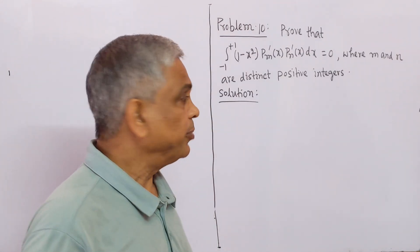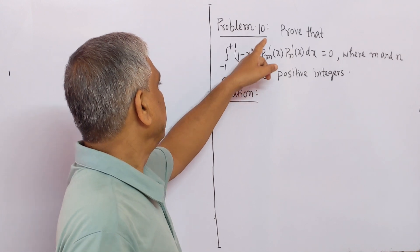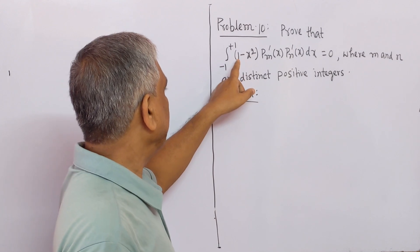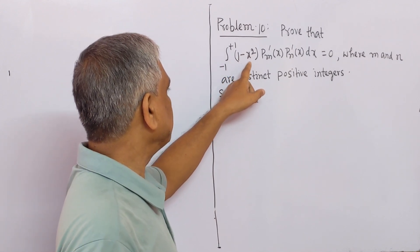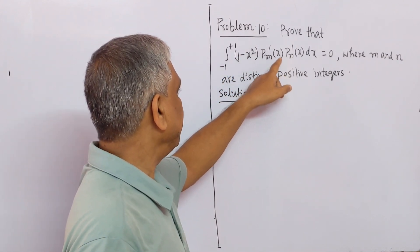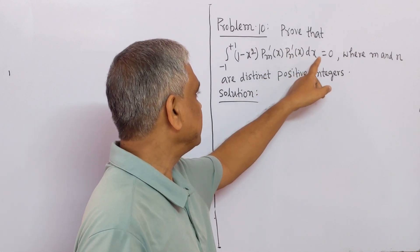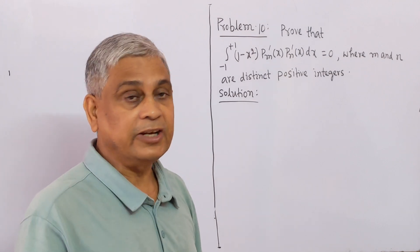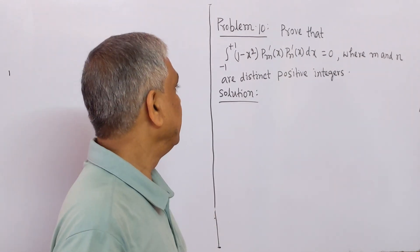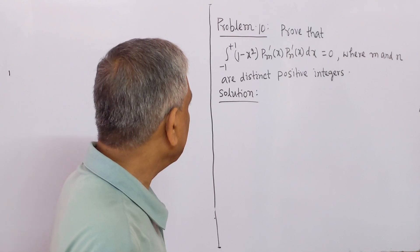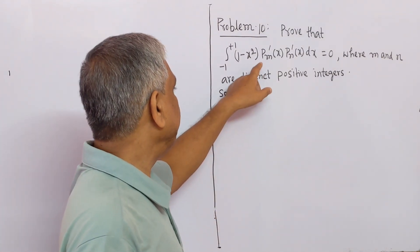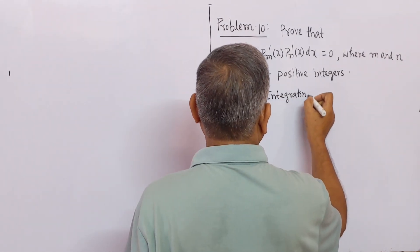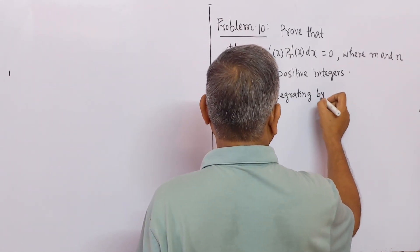Now we solve problem number 10. Prove that the integral from -1 to +1 of (1-x²) P_m'(x) P_n'(x) dx equals 0, where m and n are distinct positive integers. We solve this problem by integrating by parts.